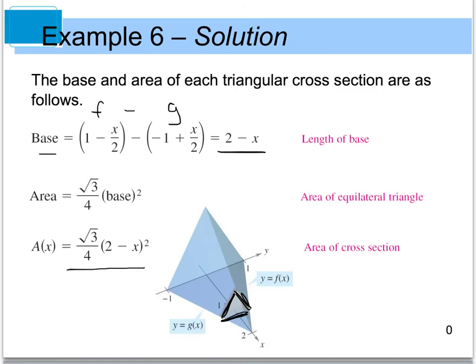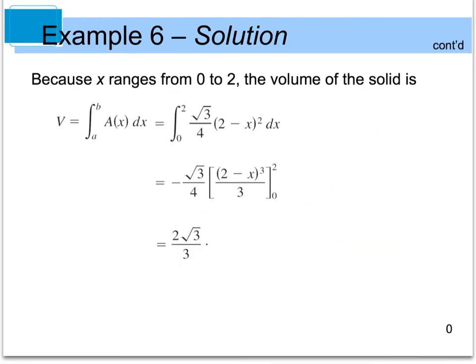Looking at this image, our x values are going from 0 to 2. So when we integrate, our volume is going to equal the integral from 0 to 2 of our area, which is the square root of 3 divided by 4 times the quantity 2 minus x, all squared, dx. When we integrate all of that from 0 to 2, we end up with 2 times the square root of 3 divided by 3 as your final volume.